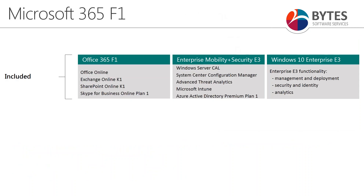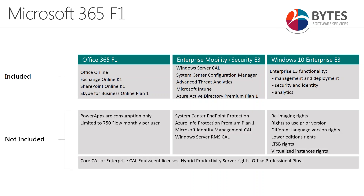Microsoft 365 F1 is a suite that does not provide hybrid use benefits and has limited features but a better price point. You still have Office 365 F1 which includes Teams, Yammer, SharePoint, Exchange Online, and Office Online. You also have Enterprise Mobility and Security and Windows 10 Enterprise E3, but you will have some limitations — for example System Center Endpoint Protection, Azure Information Protection, MIM CALs and RMS CALs are not available, and there are also some limitations on Windows 10 licenses such as downgrade rights and virtualization rights.